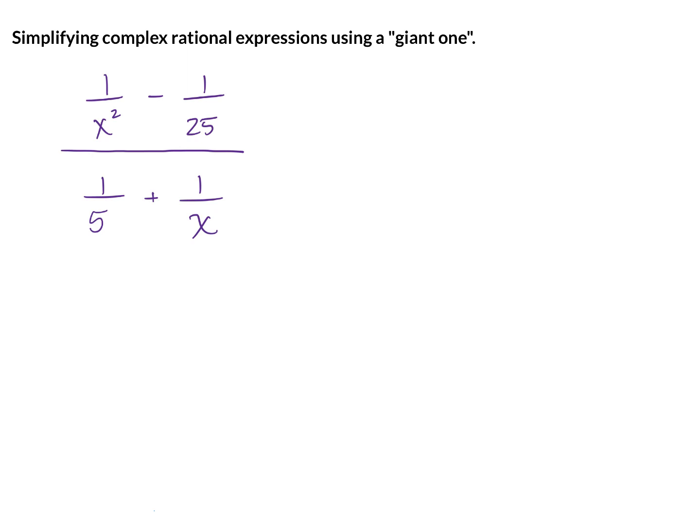First of all, we need the LCD of the numerator and the denominator. In the numerator, the LCD is x squared and 25. In the denominator, the LCD is only 5x, but we need the LCD for the entire fraction. So even though the LCD for the denominator is just 5x, we also need it for the numerator, which is x squared times 25. So this is going to be 25 times x squared is going to be our LCD for the entire fraction.